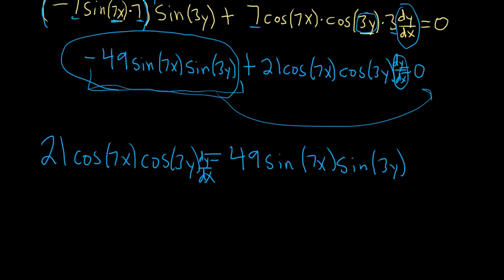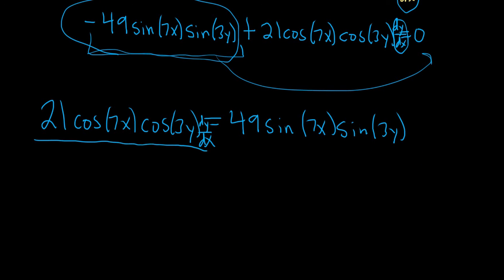Now we have to solve for dy/dx. We'll divide both sides by this piece here, 21 cosine 7x cosine 3y, and then same thing over here, 21 cosine 7x cosine 3y. It's a lot of writing.